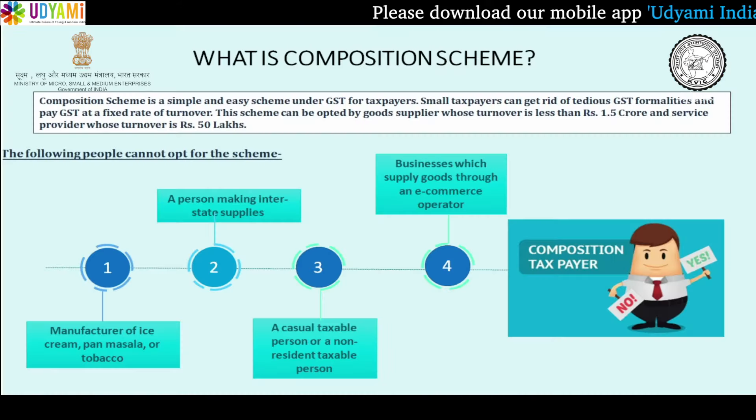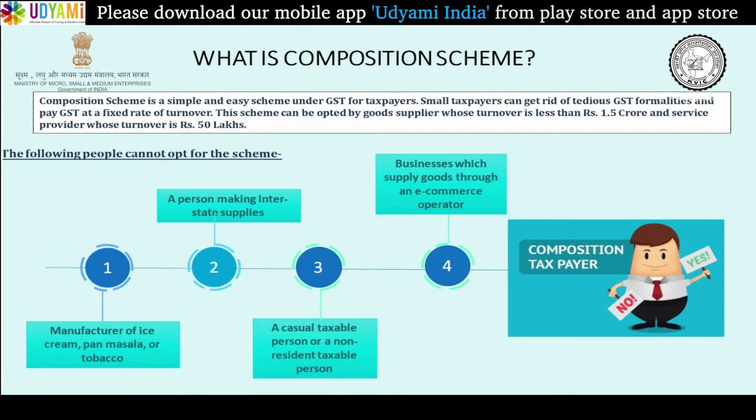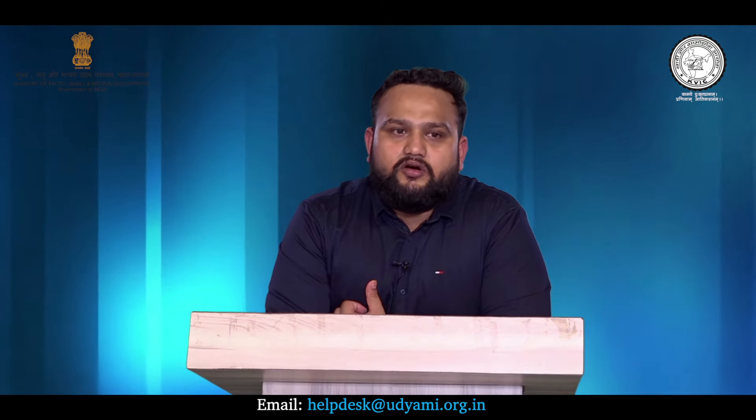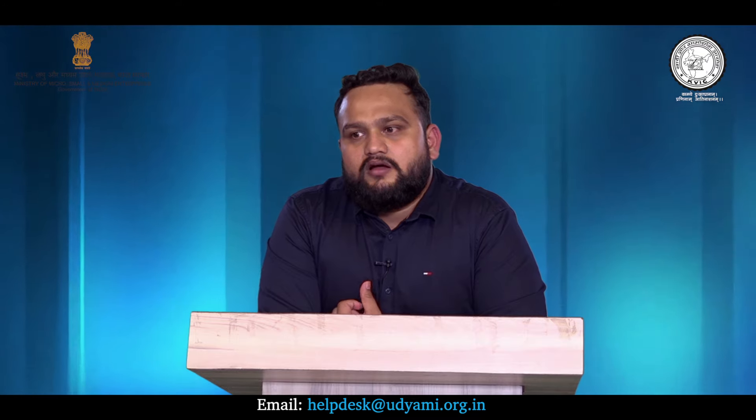First of all, we have to understand who can avail the composition scheme. Point number one: if someone is manufacturing or selling a good, the threshold limit for him to opt for the composition scheme is 1.5 crores. And if he is providing services, the threshold limit for him is 50 lakh rupees only.